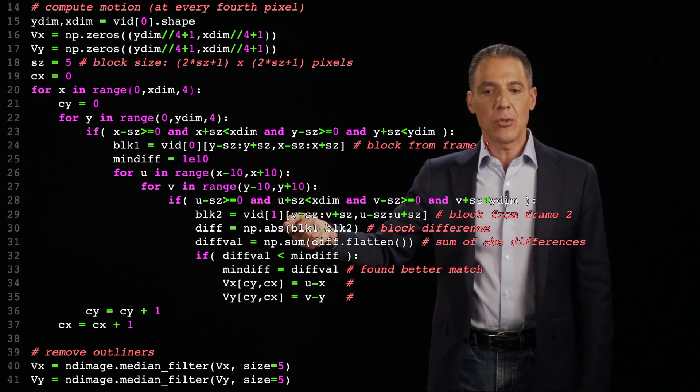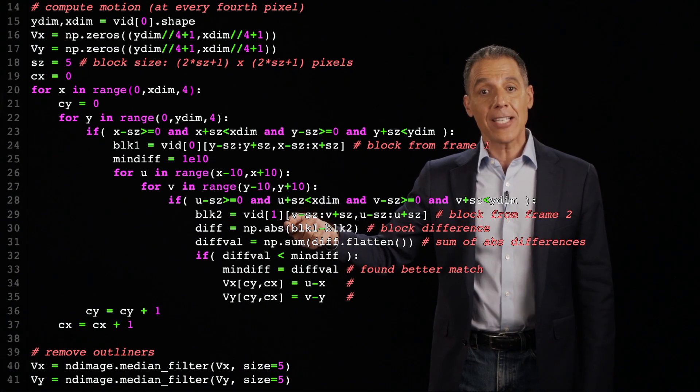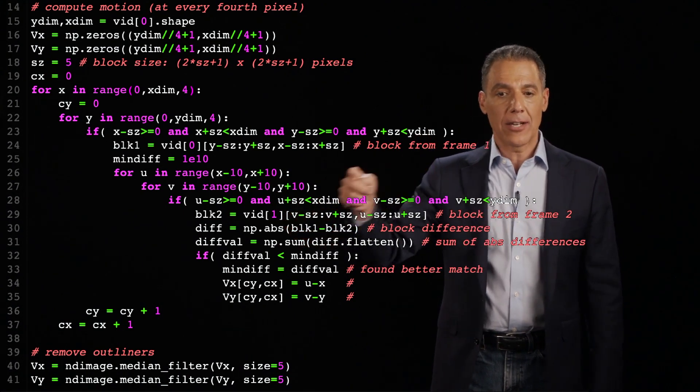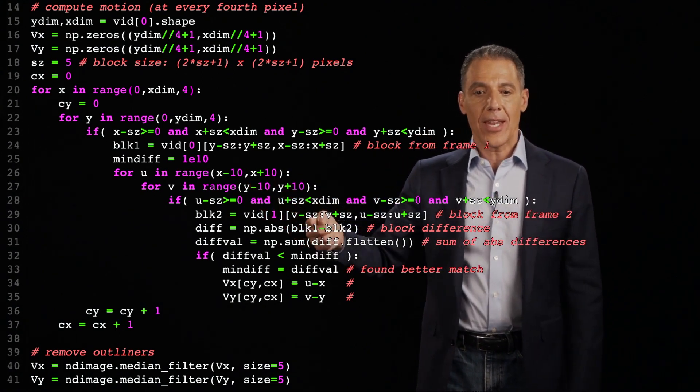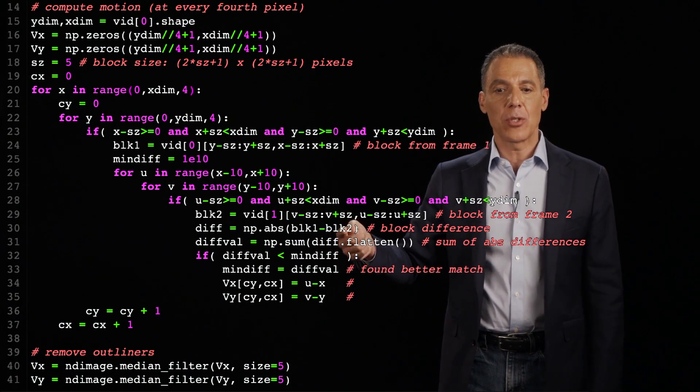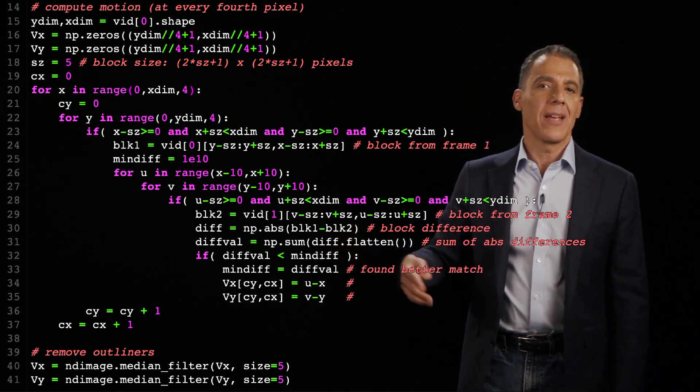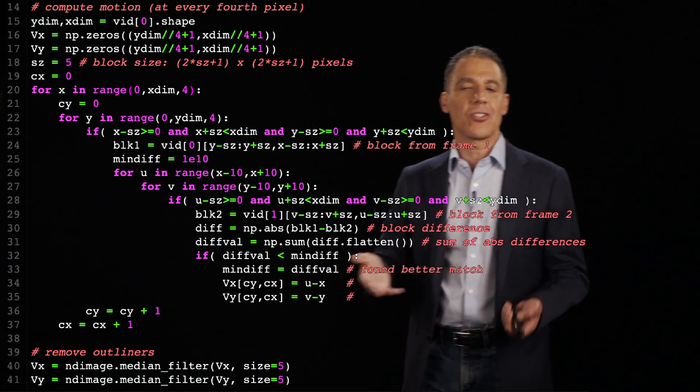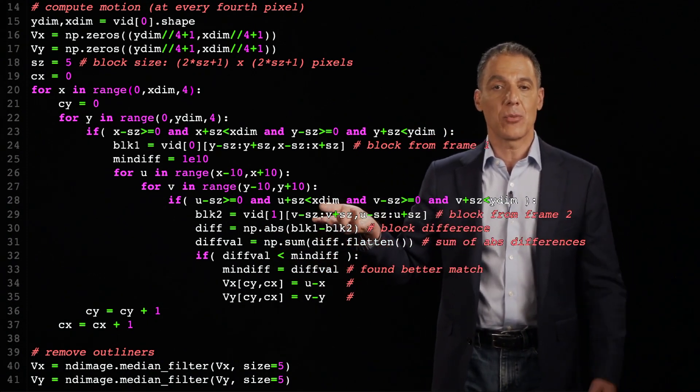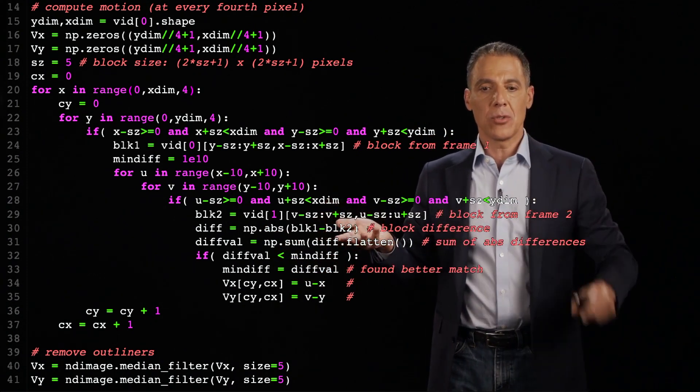And then what I'm going to do is grab the block at the next moment in time, centered at this point right here. And then I'm simply going to compute the absolute value of the difference between them. Could have squared it. I could have done anything. This is just the absolute value of the difference between the block at frame one, the block at frame two.